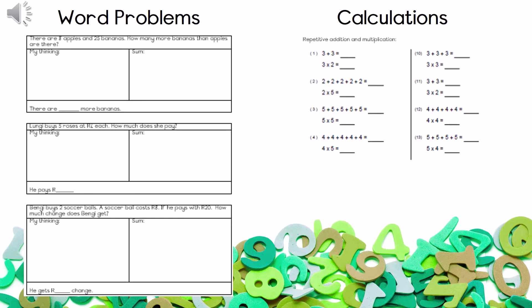The last one is repeated addition. You're going to plus, plus, plus, plus the sum and get the answer. Then also multiply the sum and see if you get the same answer. Remember, three plus three means we're going to count two times in three, which is exactly the same as three times two.